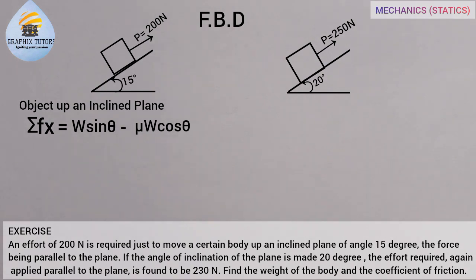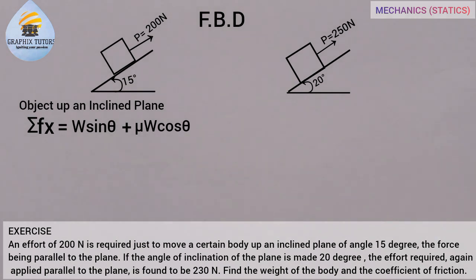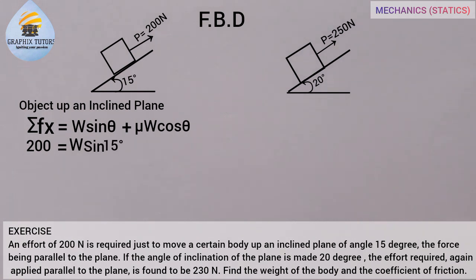Now let's apply this to our two equations. For the first equation, the summation of Fx equals the force, which is 200 Newton. This equals W sine theta — where theta is 15 degrees — plus mu W cos 15 degrees. Note that both W and mu are not given.